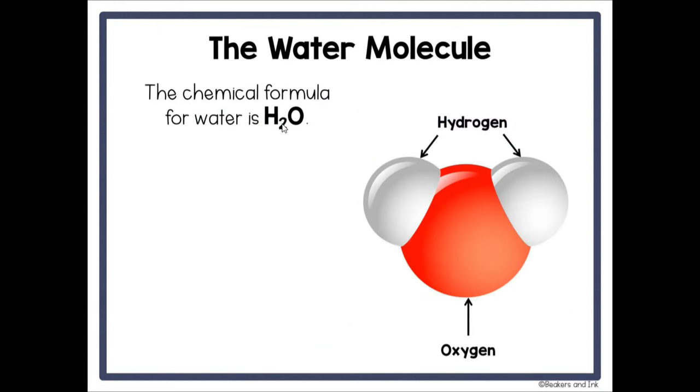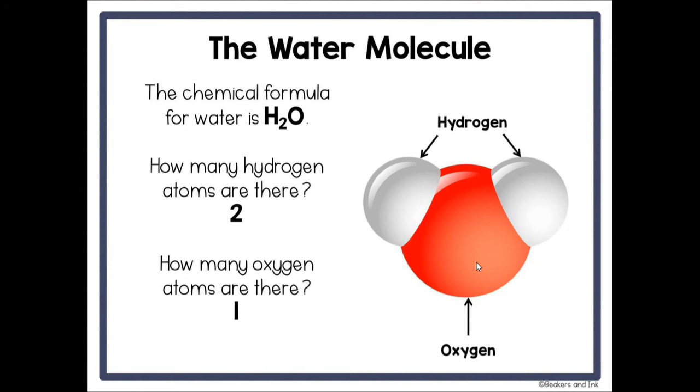So if we look at the water molecule, here's another representation. We know that the chemical formula for water is H2O. The 2 is the subscript and that tells us that there are 2 hydrogen atoms. If you look here at the water molecule, it kind of resembles a Mickey Mouse. We have the 2 ears, which are our hydrogen, because we know that we have 2 hydrogen atoms. And then we have kind of the face of Mickey Mouse, which would be your oxygen. So we know that water has 2 hydrogen atoms and it has 1 oxygen atom.